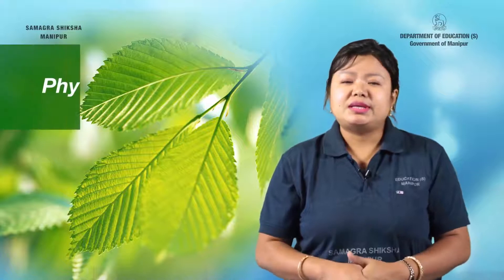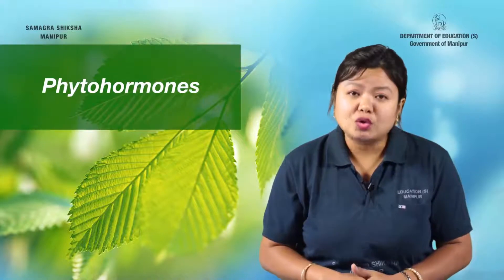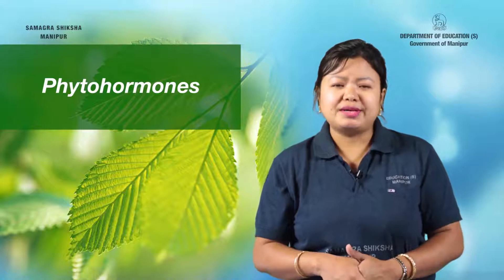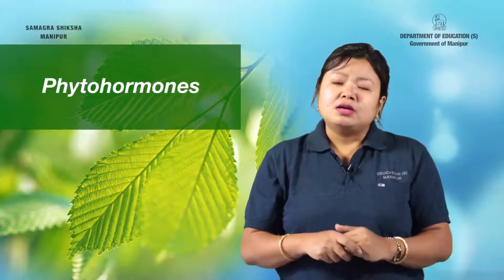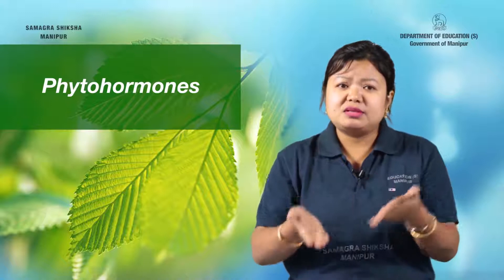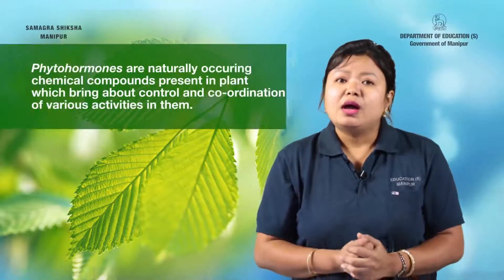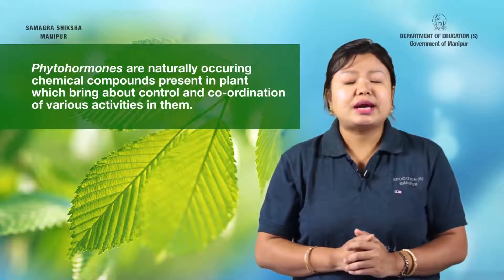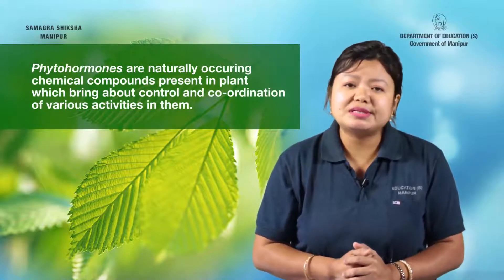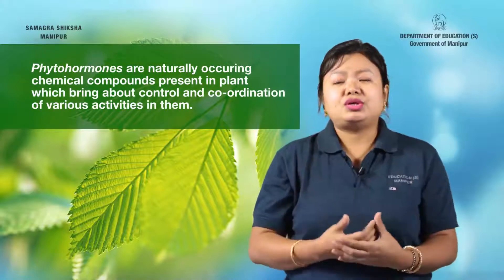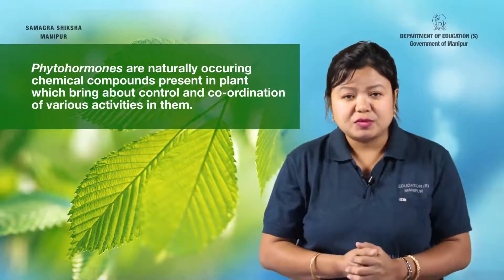The chemical compounds produced by plants in response to stimuli are termed phytohormones, which are the plant hormones. Phytohormones are naturally occurring chemical compounds present in plants which bring about the control and coordination of various activities in them.